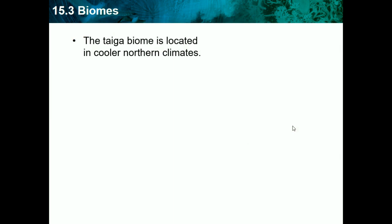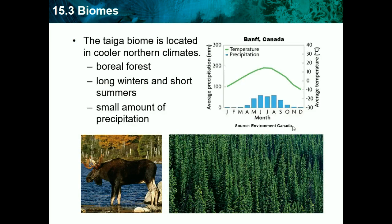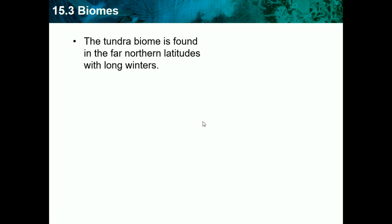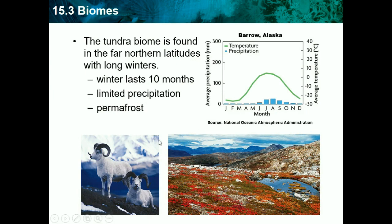The taiga biome is located in cooler northern climates. It has boreal forest, long winters and short summers, and small amounts of precipitation — think of a northern Canadian forest. The tundra biome is found in the far northern latitudes with long winters that can last ten months, limited precipitation, and permafrost. It's always cold there, and most animals are probably white to adapt and blend in with their environment.